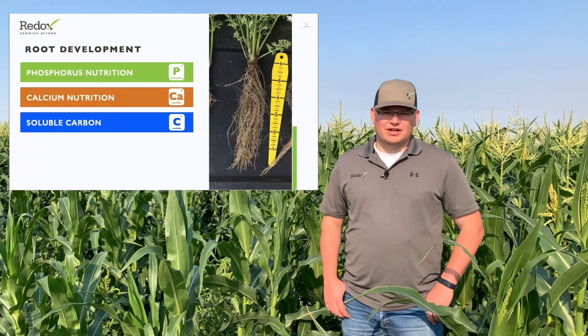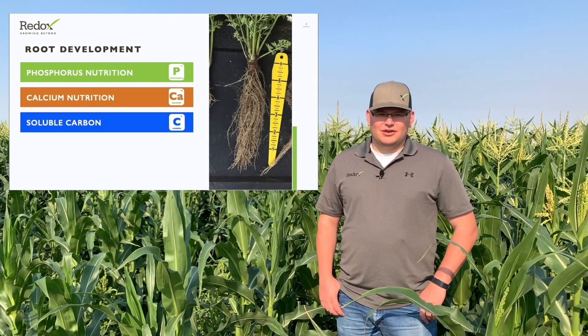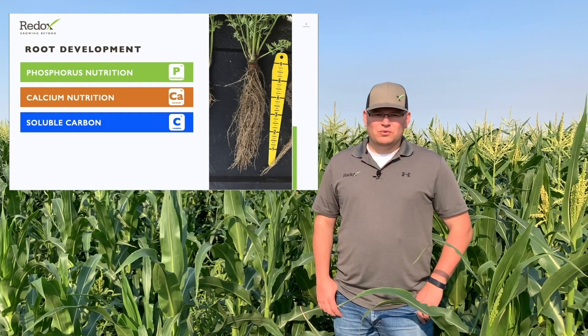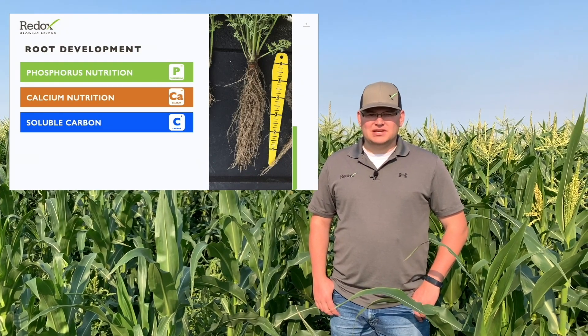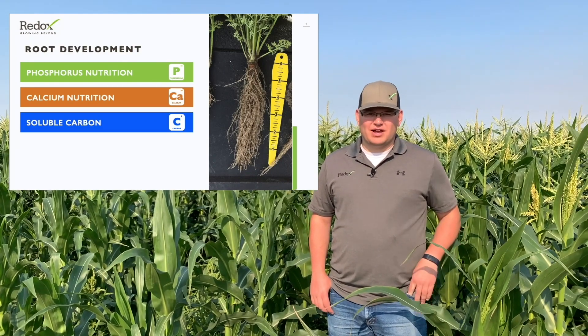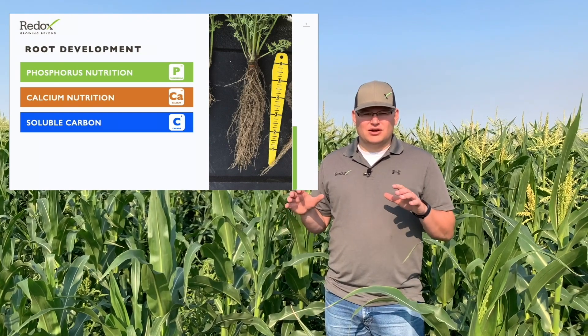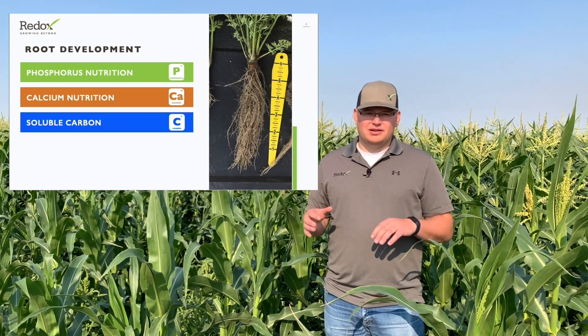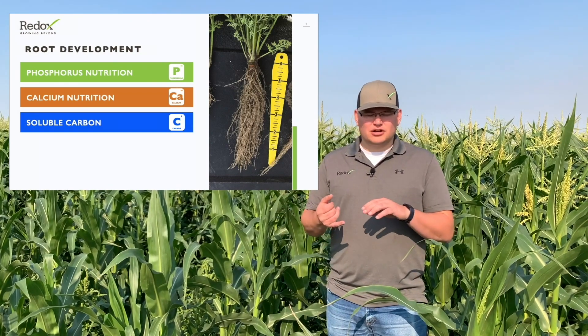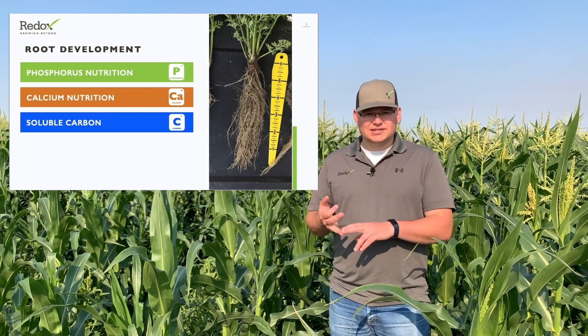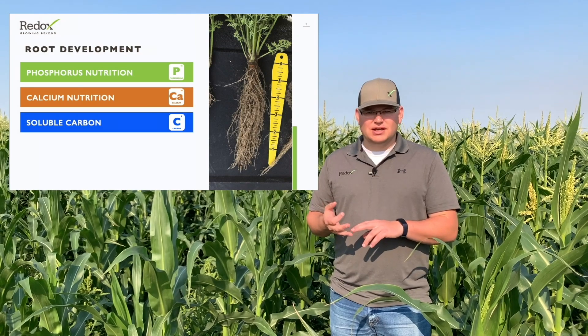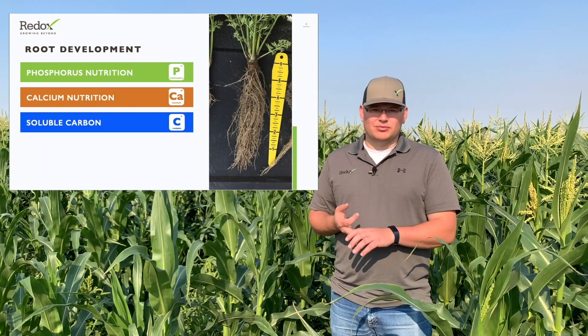Hi guys, Jeff Yoder here. I've been asked to talk to you guys about root development. When we're thinking about root development up here in the Pacific Northwest, we kind of focus on three main areas: phosphorus nutrition, calcium nutrition, and soluble carbon.